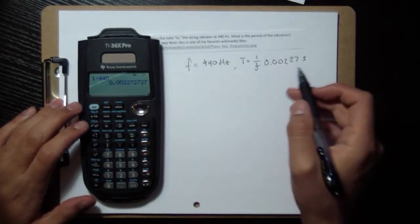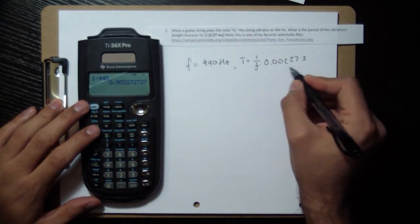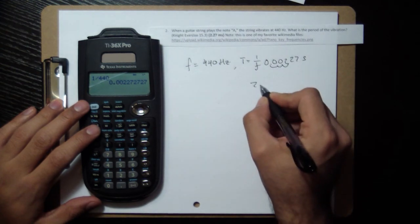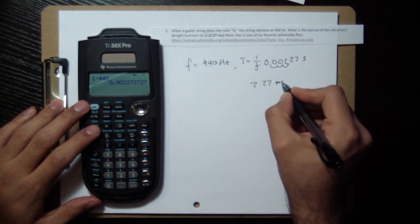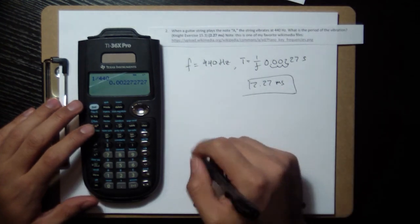Our answer is in milliseconds, so to get to milliseconds we can say 2.27 milliseconds. Milli is one thousandth of a second. That's our period. Done.